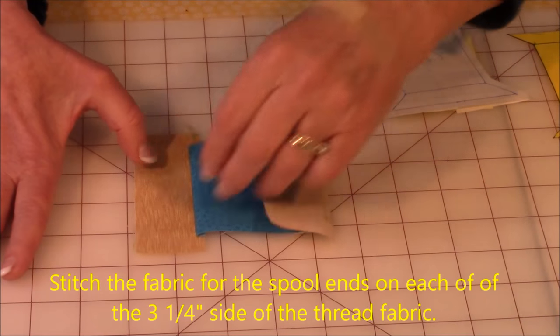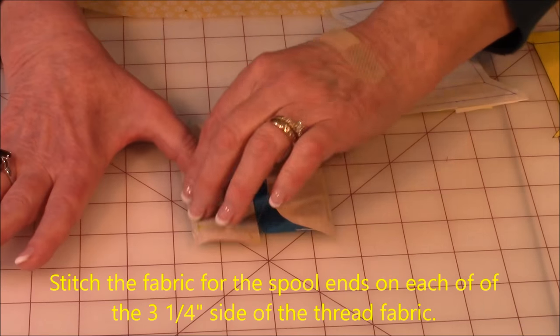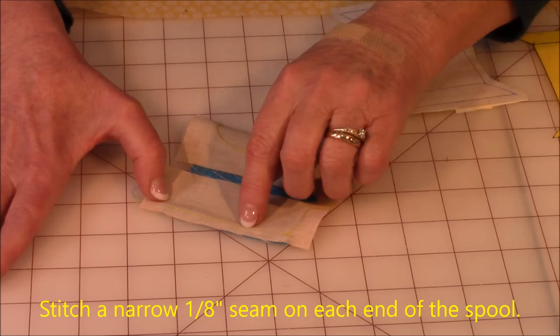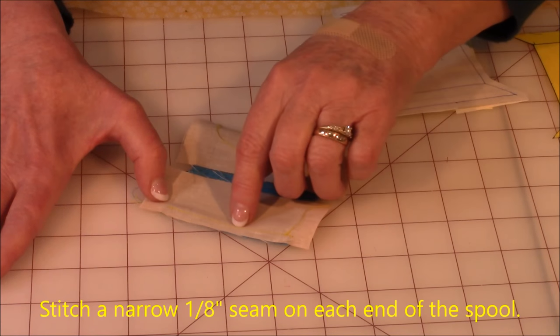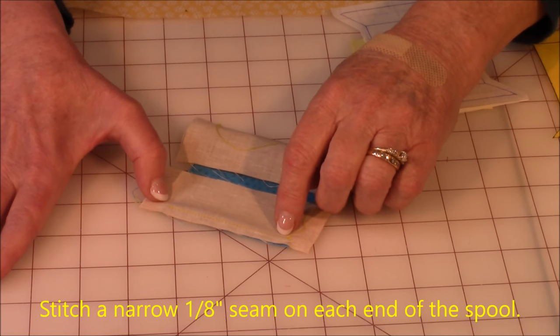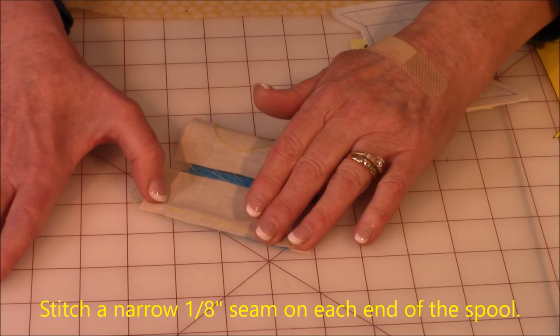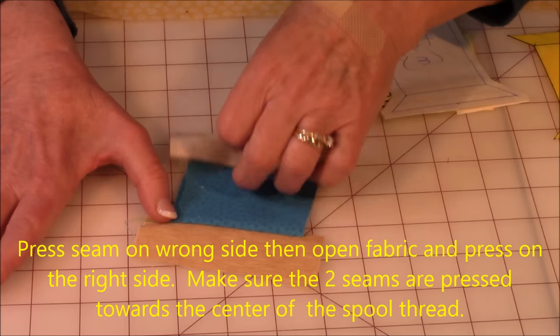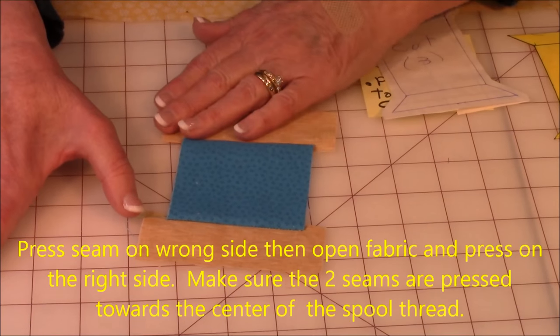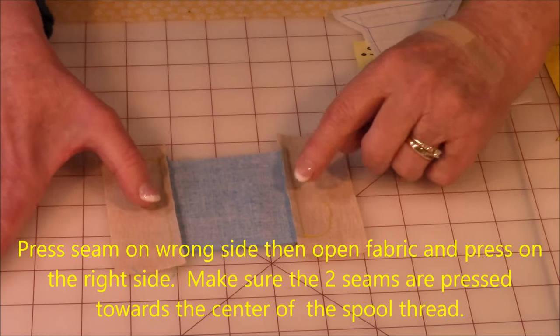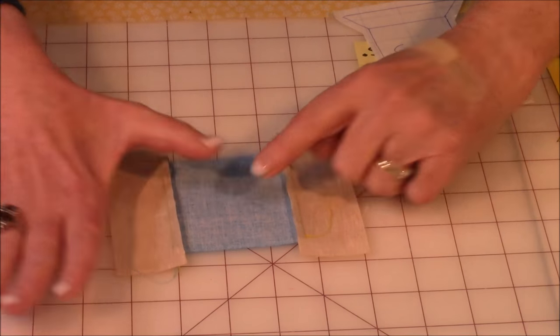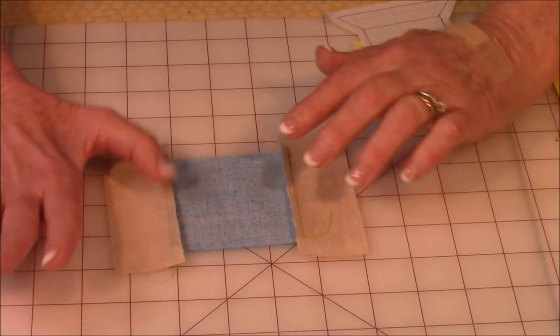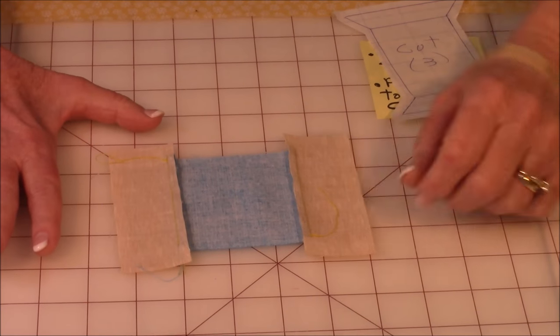Then pin and stitch one eighth of an inch. A very narrow eighth of an inch. Then press it on the wrong side. Then open it up and press on the right side. Now make sure both seams are going towards the center of the spool. That's real important. Don't get this stuff confused.